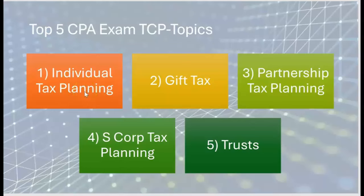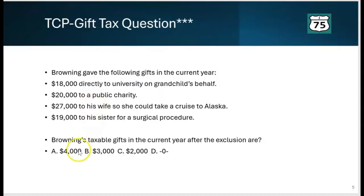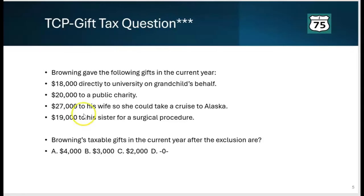Gift tax is another big part of the TCP exam. This question asks: what are Browning's taxable gifts in the current year after the exclusion? Browning gave the following gifts: $18,000 directly to the university on his grandchild's behalf for tuition — nothing there is subject to gift tax because it was given directly to the university. $20,000 to a public charity — gifts to charity are unlimited, not subject to gift tax. $27,000 to his wife for a cruise — gifts between spouses are unlimited.